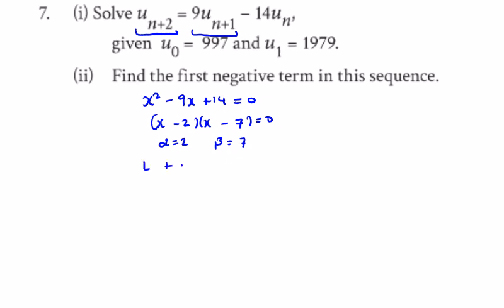So l plus m is u_0, l plus m equals 997. And l times alpha, 2 times l, plus m times beta, 7m, is the u_1, 1979.